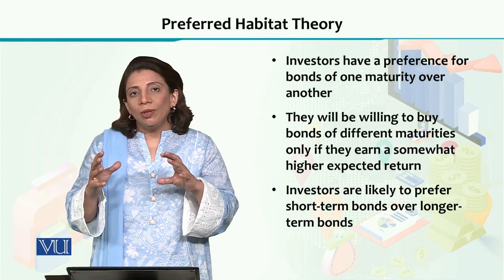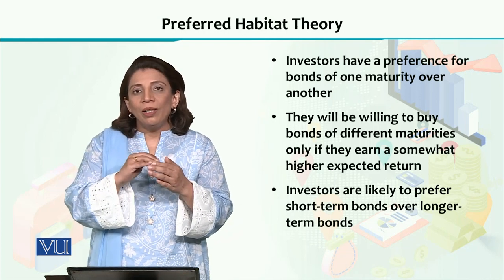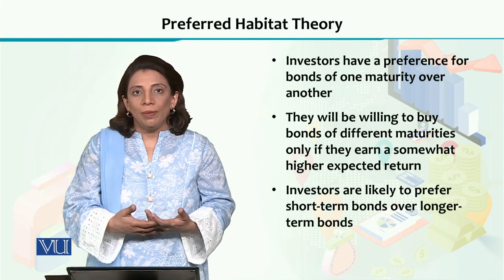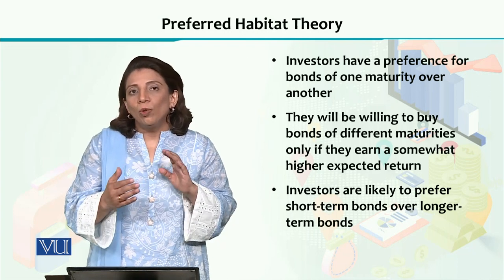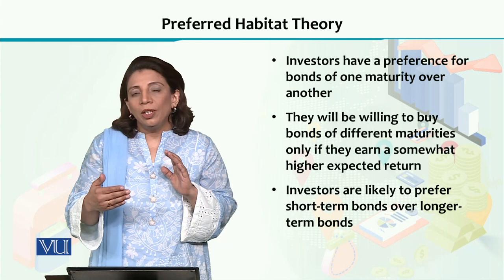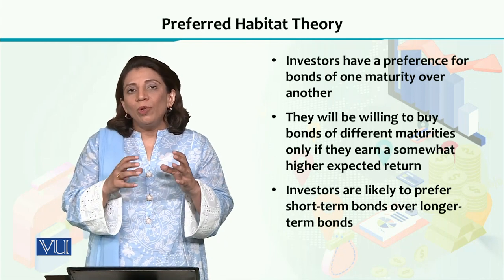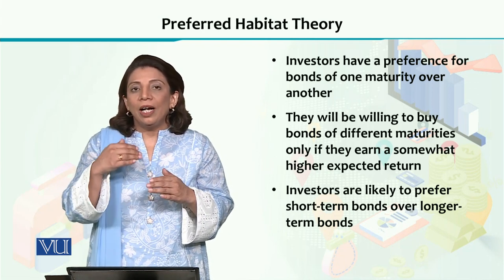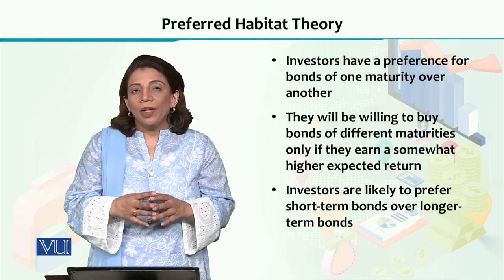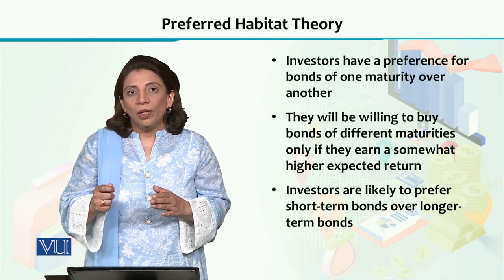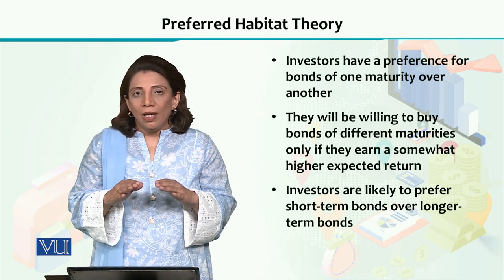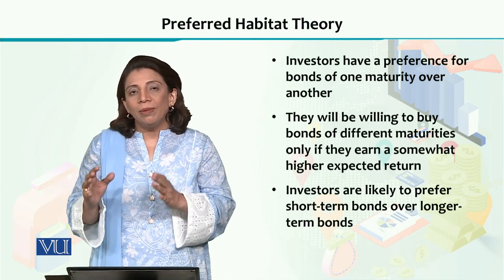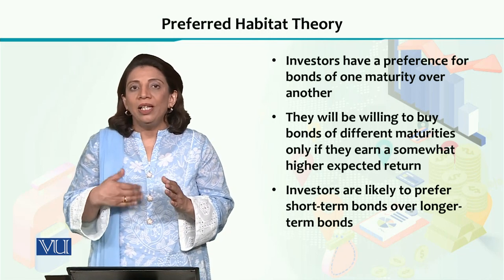Investors cannot be switched from one type of category to another unless a higher yield is offered to them. For example, since most people prefer to invest in short-term bonds, if you want them to invest in medium-term or long-term bonds, you will have to offer something on top of what they can earn from short-term bonds. In other words, every investor has a preferred habitat.